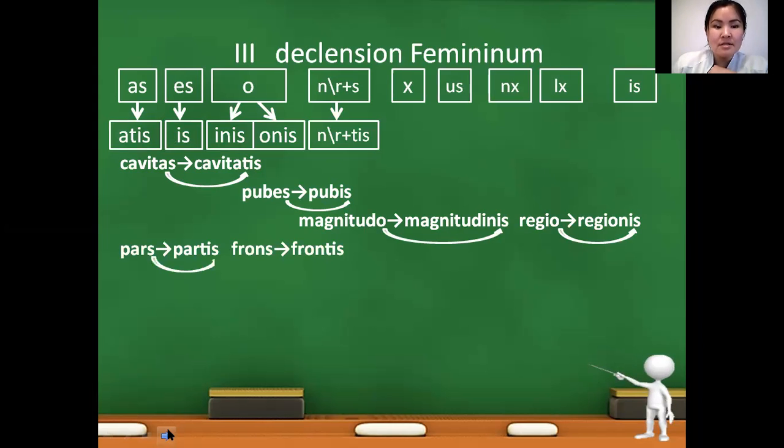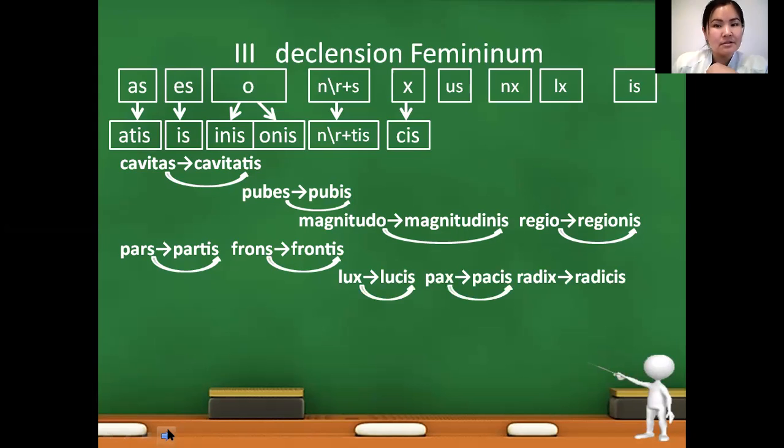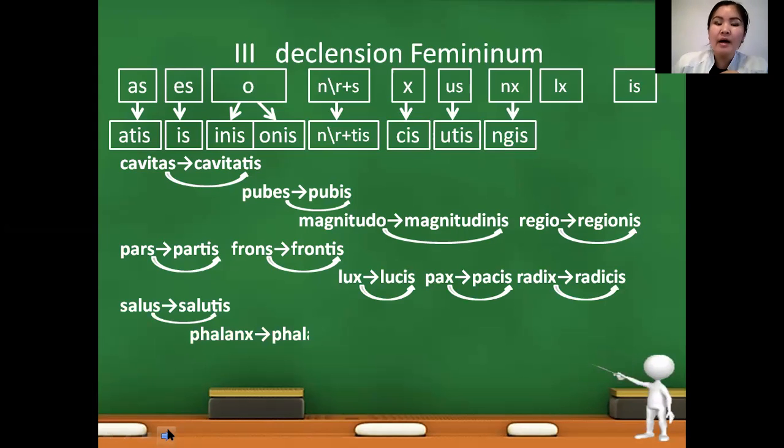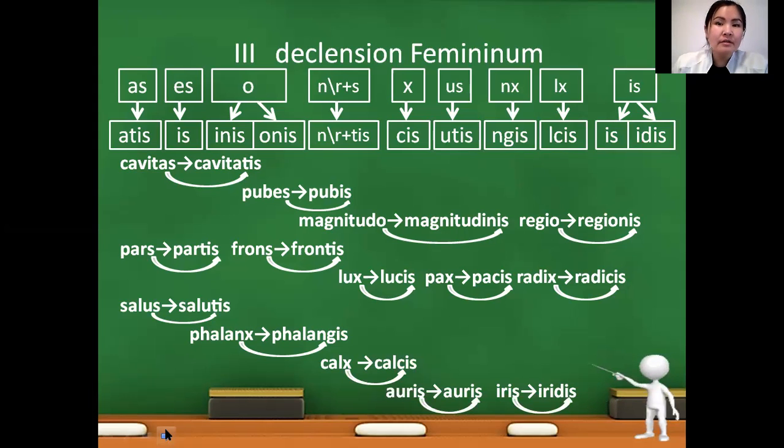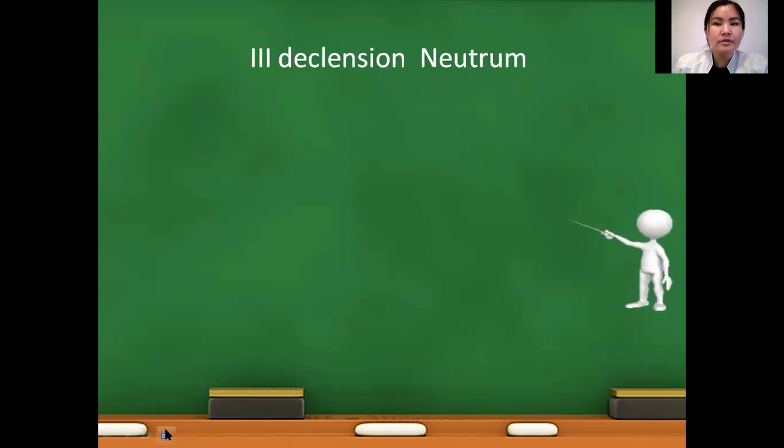NX we change to ntis: phalanx to phalangis. Ending X we change to ending cis: lux to lucis, radix to radicis. Ending US we change to ending utis, for example salus (health) to salutis (of health). Ending X we change to ngis, like phalanx, genitivus form will be phalangis. For ending IS we have two genitivus endings: is for Latin origin words and idis for Greek origin words. So auris, genitivus form auris. Greek origin words like parotis, epiglottis have genitivus parotidis, epiglottidis.